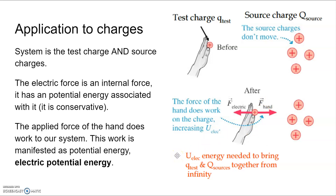Basically, the work done to bring this test charge towards the source charges manifests itself as potential energy — specifically, electric potential energy. What's important here is that we're including both the test charge and the source charge in our system, which makes the electric force an internal force. Therefore, in terms of energy, rather than having work done by an external force, that electric force gives us electric potential energy instead.